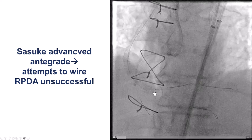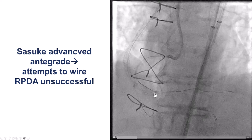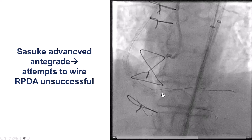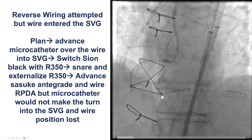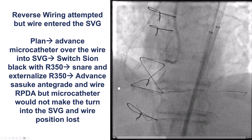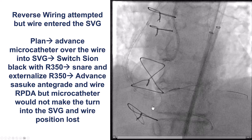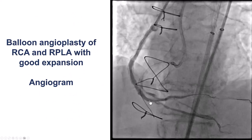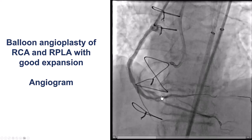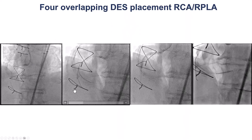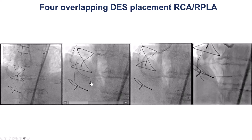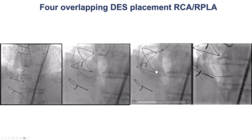We still wanted to get a wire into the right posterior descending artery. We used the Sasuke dual-lumen microcatheter, but the angulation was just too acute and we could not get the wire to go backwards. We tried the reversed guidewire technique, but that didn't work either, and we just could not make the bend. We ballooned the RCA and the right posterior lateral and had some good expansion of the vessel. We then decided to stent — even though we had not secured the PDA, we did have access to it through the saphenous vein graft, which would help troubleshoot if there was a problem, and this became very important later on.